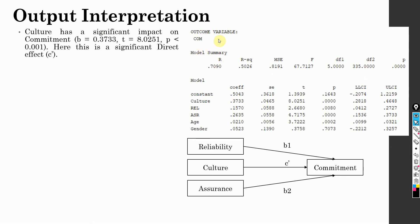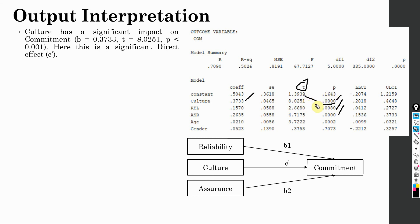The third part of the output shows the final dependent variable commitment, with all three variables — the IV, the mediators, and the control variables — affecting the outcome. Culture has a significant impact on commitment: 0.3733, significant. Reliability is significant. Assurance is significant. When we say significant, the p-value is less than 0.05 and the t-value is greater than 1.96 for a two-tailed test. All p-values for culture, reliability, and assurance affecting commitment are less than 0.05.